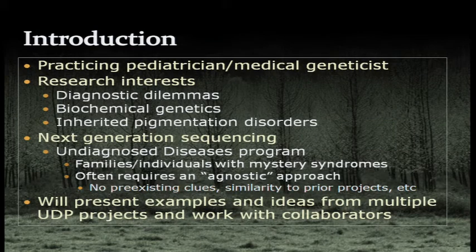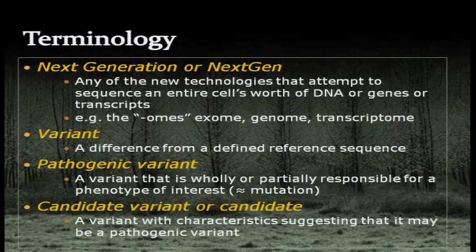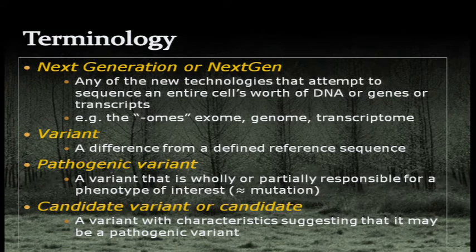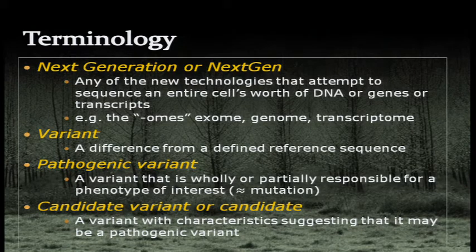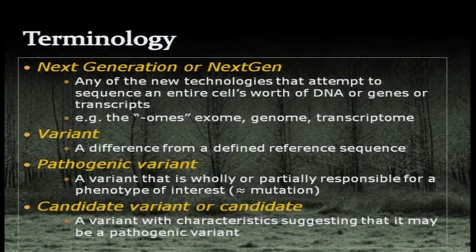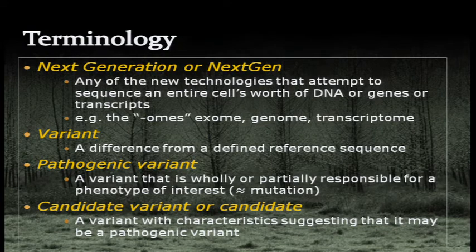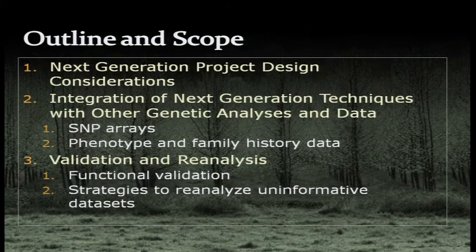I will be talking about some platforms — the usual disclaimers, I'm not advocating for any of them. I'm going to use 'NextGeneration' to refer to exome sequencing, and 'variant' means any difference from the defined reference sequence. A pathogenic variant is one that is wholly or partially responsible for a phenotype of interest — roughly equivalent to a verified mutation. A candidate variant is something on your list that might be pathogenic but hasn't been verified yet; that list varies as you go through all the filtering techniques heard about today.